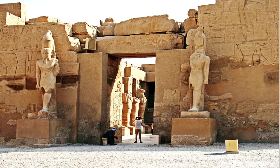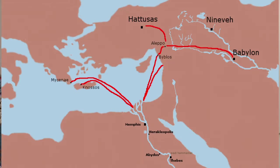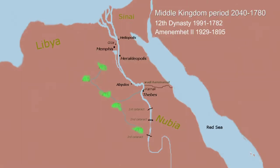Senusret I and Amenemhat II began to trade with the Minoans, the Mycenaeans, Lebanon, and Byblos — this was the Mediterranean Sea trade. He also dredged the canal that goes from the Nile River to the Fayoum, a lake just beside the Nile River just south of Memphis, connected by a canal. They were able to control this canal and the irrigation to the farmland in the entire area.